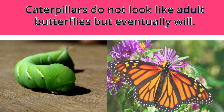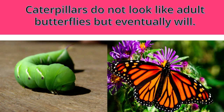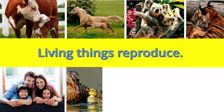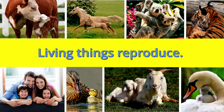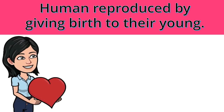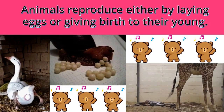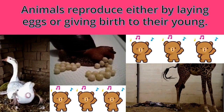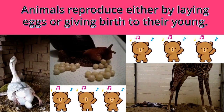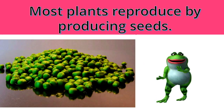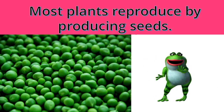Caterpillars do not look like adult butterflies, but eventually will. Living things reproduce. Humans reproduce by giving birth to their young. Animals reproduce either by laying eggs or giving birth to their young. Most plants reproduce by producing seeds.